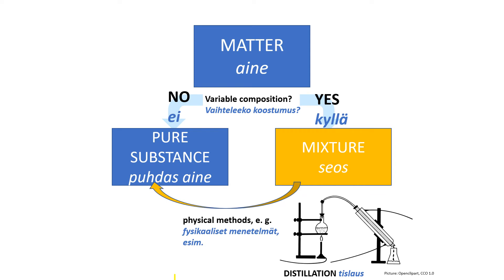Mixtures can be separated into pure substances by physical methods. One of the most important methods for separating the components of a mixture is distillation — tislaus — a process that depends on differences in the volatility of the components. Volatility — haihtuvuus — means how readily substances become gases.